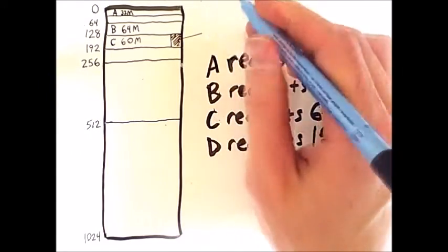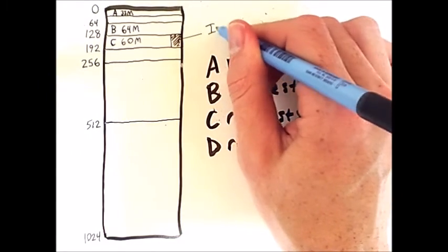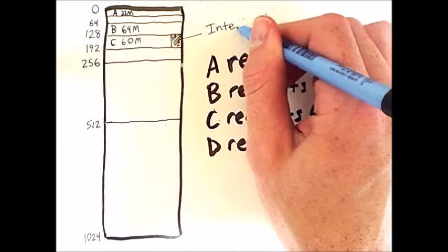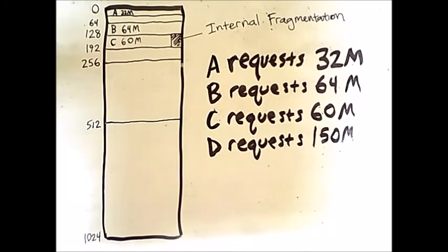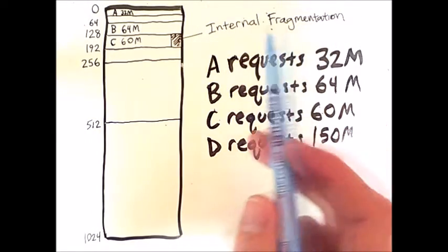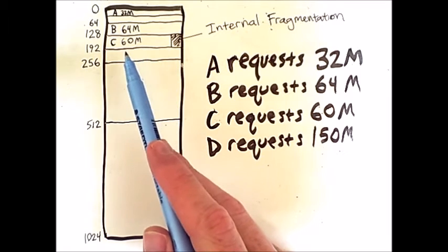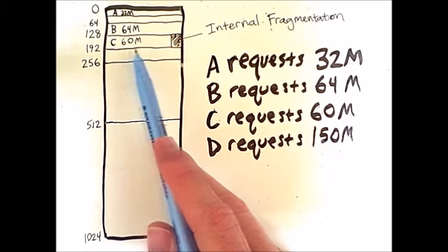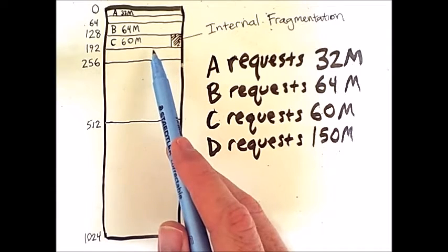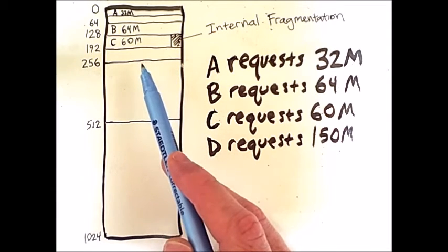This is an example of internal fragmentation. Recall that internal fragmentation is fragmentation within a partition that cannot be used, because the request filling that partition is less than the full size of that partition.